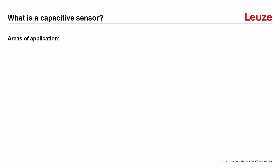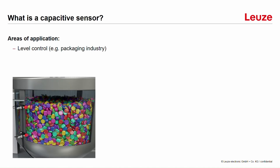For capacitive sensors, there are three main areas of application. First of all, level control. You can see here a short picture — also an example from the packaging industry. In this picture you see two sensors, one on the bottom and one on the top, and they are detecting the upper and the lower filling levels in order to start and stop the refilling process.